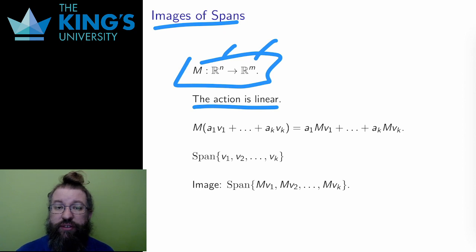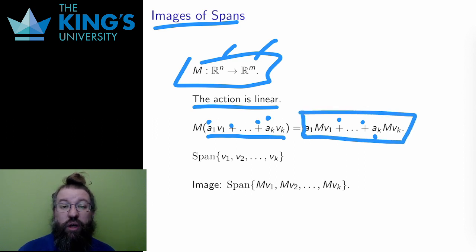Linear means that addition and scalar multiplication are preserved. So what happens if I act on some vector that is expressed as a linear combination? M acting on some a1v1 plus a2v2 and on to akvk. Well, this is linear, so I can do the addition first or after the transformation, and likewise the scalar multiplication. The result is the same linear combination of action on each individual vector. a1 times M acting on v1 plus a2 times M acting on v2 plus so on to ak times M acting on vk. Each piece of this is where the transformation M sends each individual vector v.